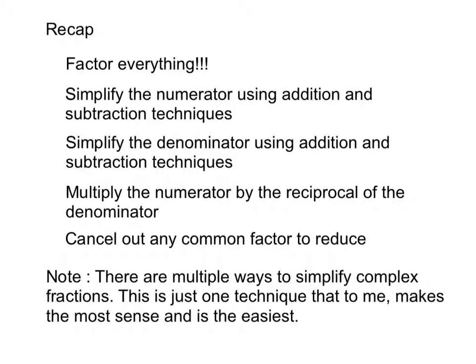That last problem was a doozy. Here's our recap: what's cool is that you're not doing anything new — you're just combining adding and subtracting, and multiplying and dividing. First step, as always, factor everything. Then simplify the numerator using your addition and subtraction techniques. Then simplify the denominator similarly, finding a least common denominator. Next, because you have a division problem, multiply the numerator by the reciprocal of the denominator and cancel out any common factors to reduce. There are lots of ways to do these types of problems, and whatever works best for you is what you want to do. This technique does the same thing every single time, which is why I show it in the video.